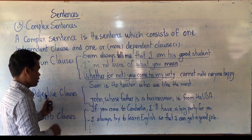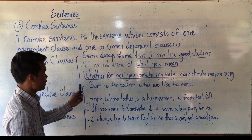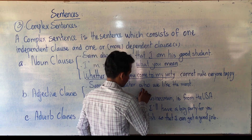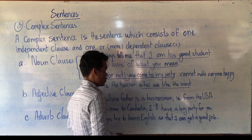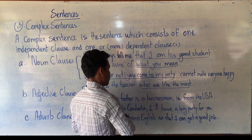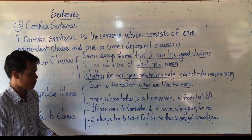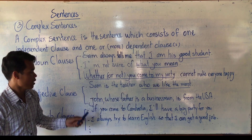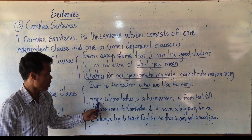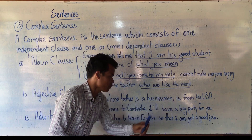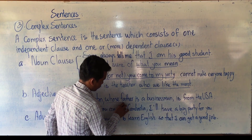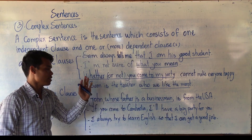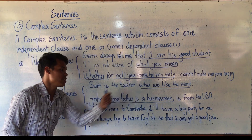How about adjective clauses? Adjective clause consists of two types — defining and non-defining relative clauses. Example one: 'Sam is the teacher who I like the most.' 'Who I like the most' is an adjective clause modifying 'the teacher.' It is a defining relative clause because no comma is used. Example two: 'John, whose father is a businessman, is from the USA.' 'Whose father is a businessman' is an adjective clause modifying 'John.' It is a non-defining relative clause because commas are used. John is a proper noun.